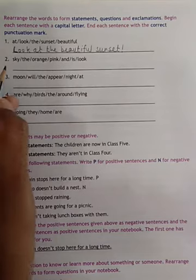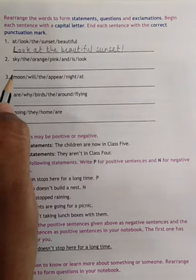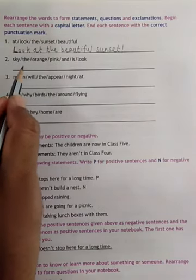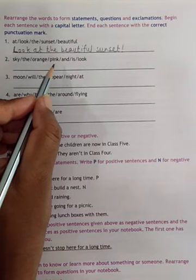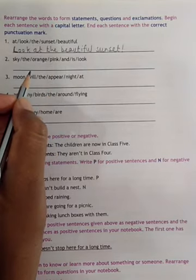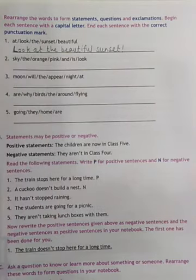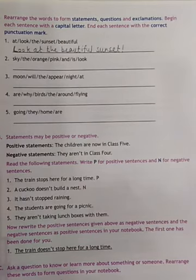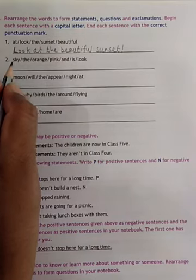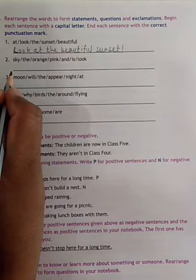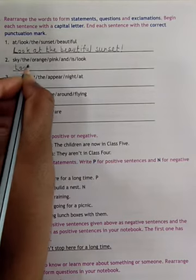Now, number second, sky, the orange, pink and is look. So, first we have to check the subject. Sky is there, orange and pink are the name of colour. Again, here in this sentence, as soon as we look at the sky, we were excited or we are excited and some expressions come from our mouth.